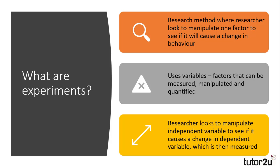The purpose of an experiment is to manipulate one factor or reason for a social behaviour and see if it causes a change in another. For example, in Rosenthal and Jacobson's study, they manipulated teachers' impressions of pupils and then measured the impacts of this. These factors that are manipulated are called variables. Researchers try to control all other causes of that behaviour, then measure and quantify the effects of manipulating the variable on social behaviours. We call the variable that is manipulated the independent variable, and the variable that is measured the dependent variable.